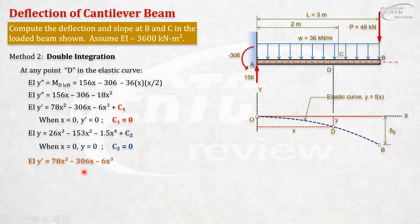To get the deflection, integrate this again. When you integrate, this will become x cubed over 3. So that will become 26. This will become x squared over 2, so 153. This will become x to the 4th over 4, so 1.5, plus another constant of integration. Your boundary condition is, we know that when x is zero at the origin, your y is also zero. Your C2 obviously is also equal to zero.